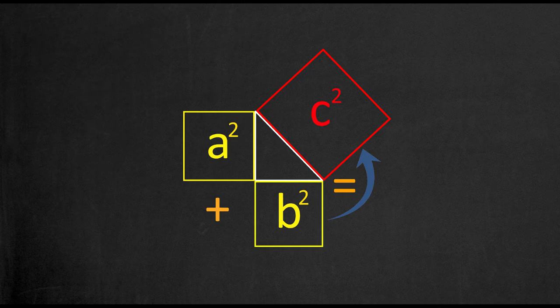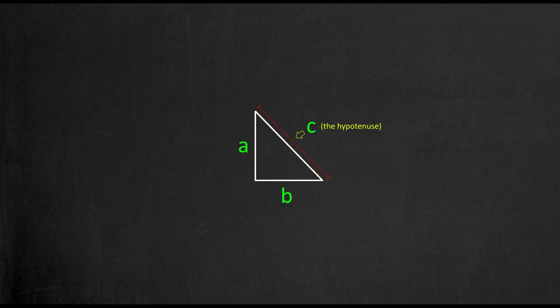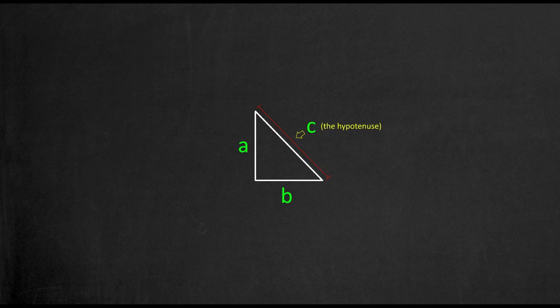In other words, when you square both of the shorter side lengths of a triangle and add the total areas up, the sum is equal to the hypotenuse squared, which is the longest side of the triangle. Hence arose the equation a squared plus b squared equals c squared.